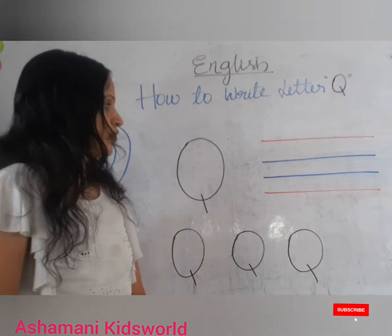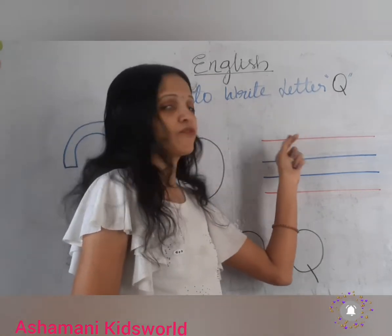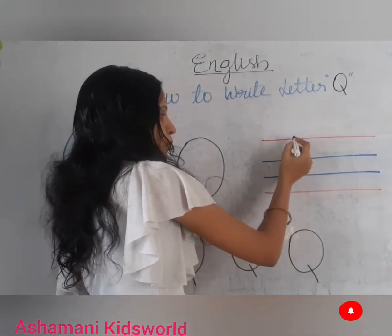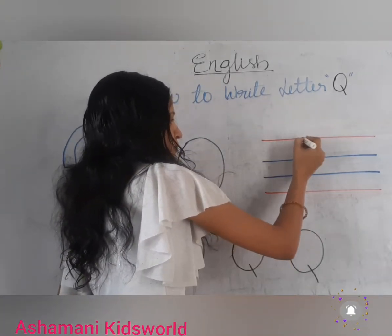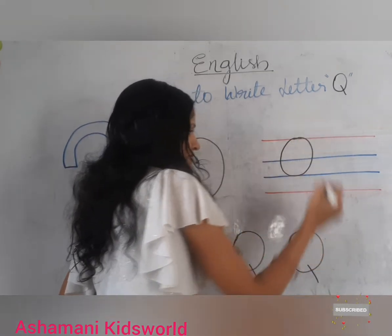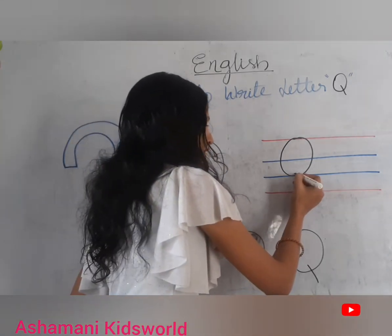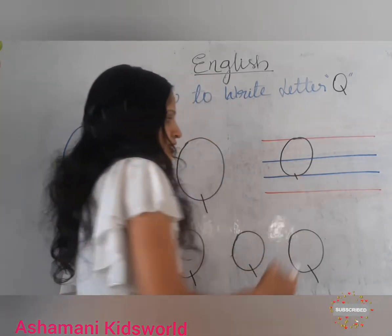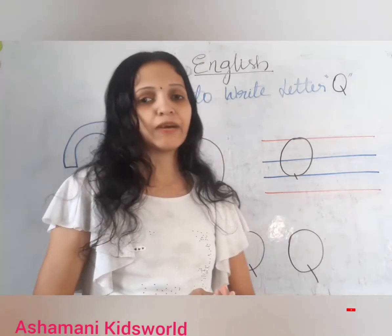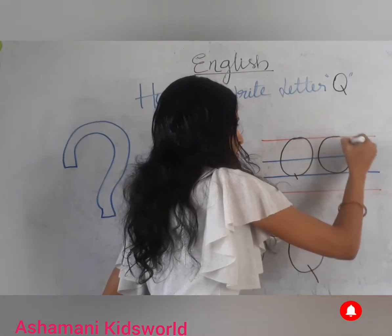Capital letter Q — you have to start writing from the top red line. Write a circle and write a small slanting line on the second blue line. This is the letter capital Q.